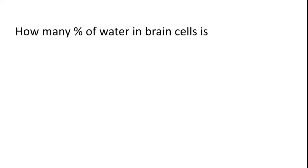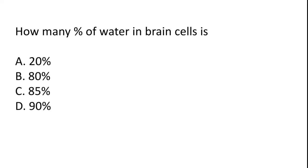How many percent of water in brain cell is? 20%, 80%, 85%, 90%. So the correct answer is option C, 85%.